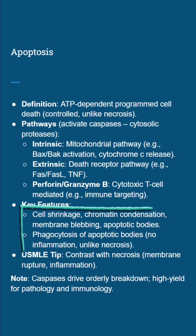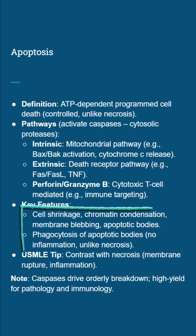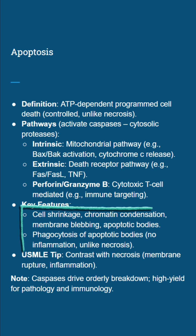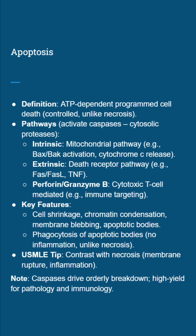The results include cell shrinkage, chromatin condensation, membrane blebbing, and apoptotic bodies that get quietly phagocytosed. No inflammation — that's the key for distinguishing apoptosis from necrosis on Step 1. Caspases are the stars here, driving that orderly breakdown.